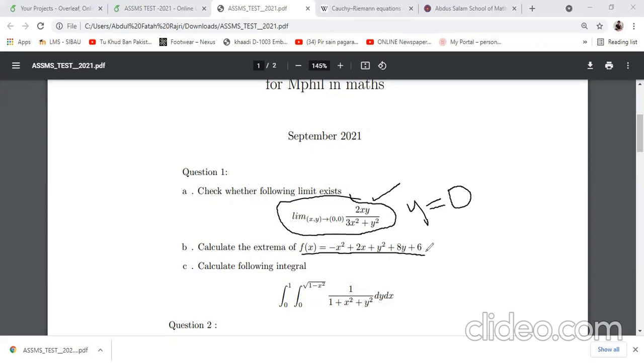Part c of question one is basically integration. This integration can be solved using polar coordinates because it involves x squared plus y squared plus one, which is sort of a circle. I believe there was a minus here. If not, again you have to take the polar coordinates and solve this.